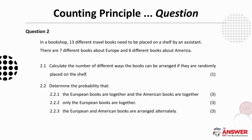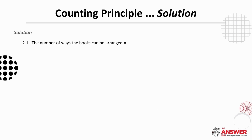Question 2 is about arranging 13 different travel books on a shelf. We are first asked to calculate the number of different ways the books can be arranged if they are randomly placed. Because all 13 books are different, there are 13 factorial ways the books can be arranged. This is because there are 13 options for the first book, then 12 for the next, 11 for the next, and so on.